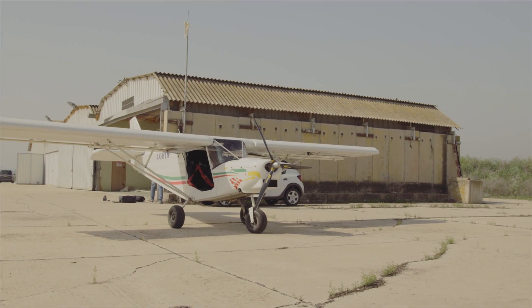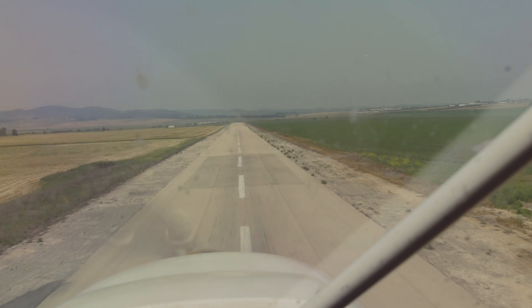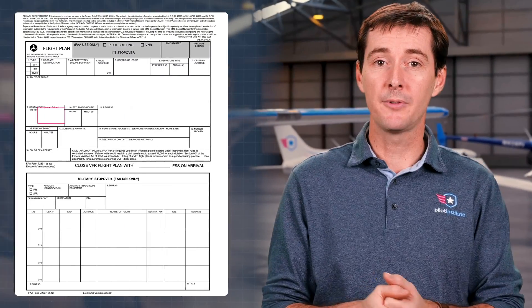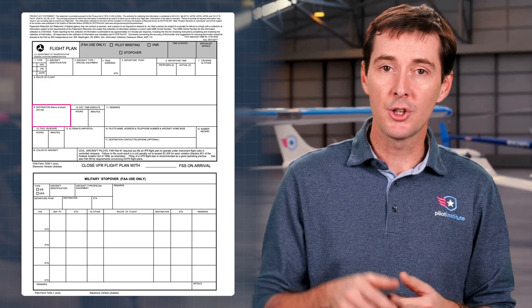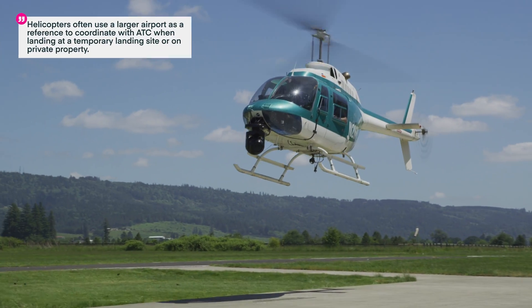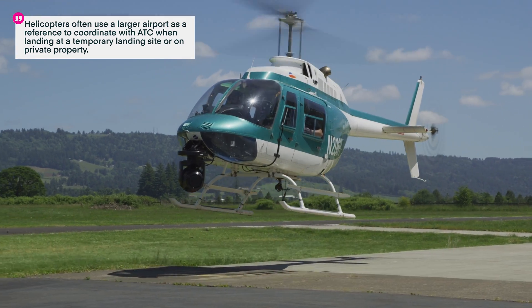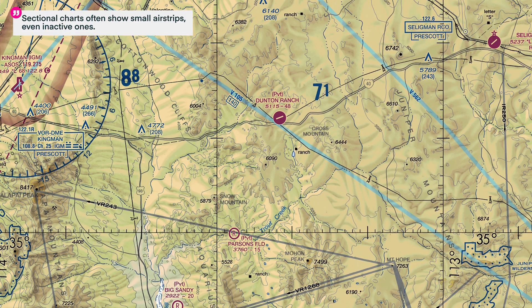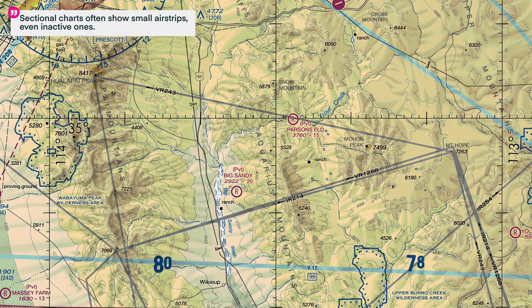But what if the airport you're flying to or from does not have a code? While small airports in the US have at least an FAA LID, some actually don't. These airports are usually private property and sometimes only temporary. If the airfield does not have an FAA LID, make sure you put the nearest available airport code when you file your flight plan, and note the actual destination in the remarks section of the flight plan. You can also use a larger airport as a reference to coordinate with ATC — helicopters do that when landing at a temporary landing site or on private property. To navigate to the airfield, use GPS coordinates, as most aircraft GPS systems allow you to enter specific latitude and longitude information.